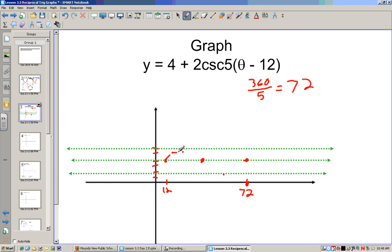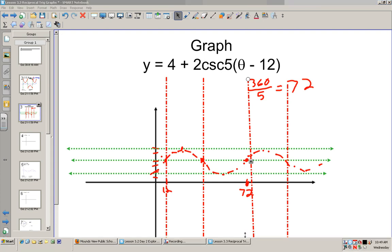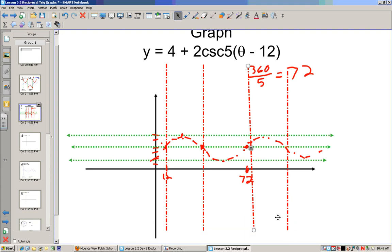Now I'm going to draw this one as a dotted line, because that's not actually the function we're looking for. Now, what I want to do here is, wherever it crosses the sinusoidal axis, I'm going to draw a vertical asymptote.